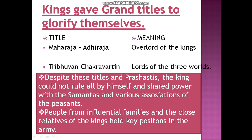Kings gave grand titles to glorify themselves — to show that they were very great. The titles included maharaja adhiraja, meaning overlord of kings, and tribhavan chakravartin, meaning lords of the three worlds. They wanted to glorify themselves, but despite these titles and prestige, the king could not rule all by himself because he always needed the support of his samantas and various associates.